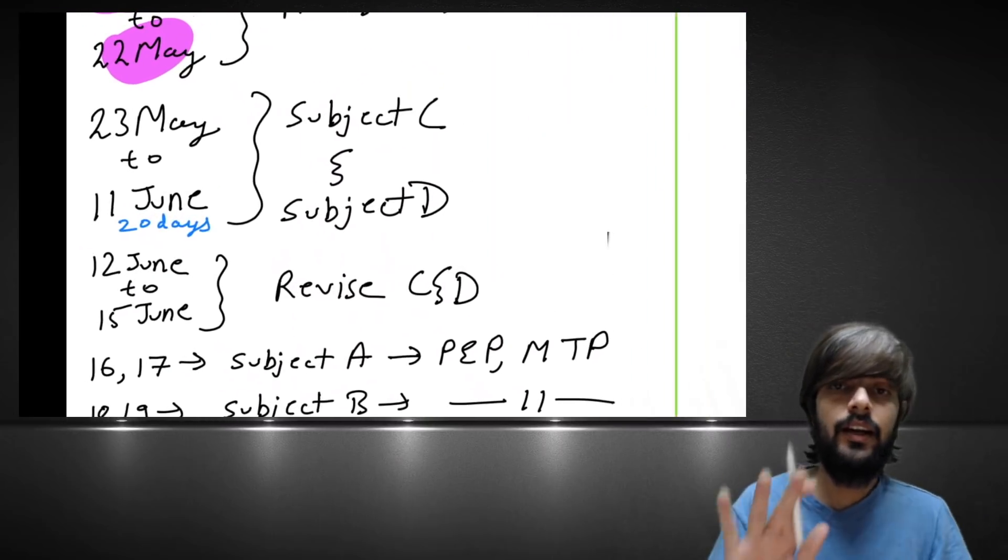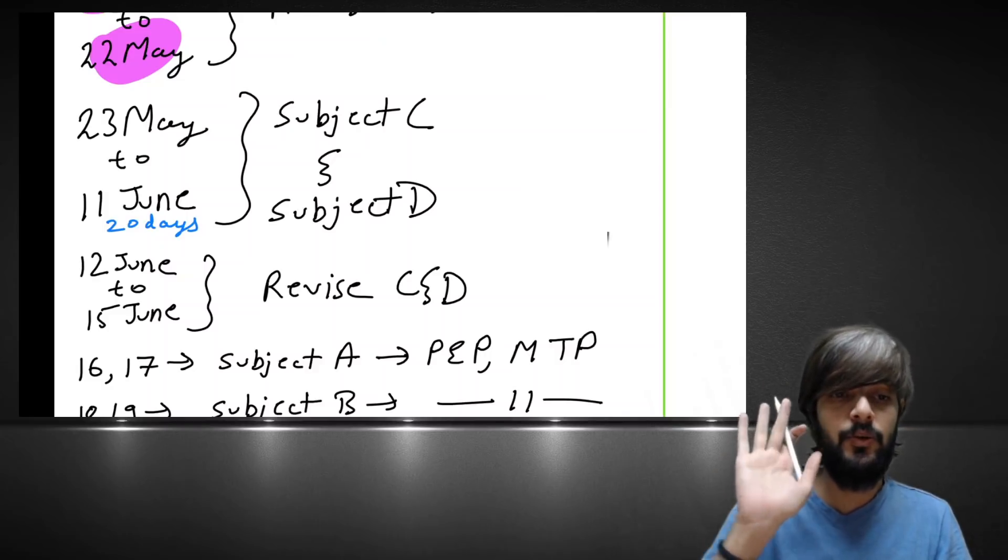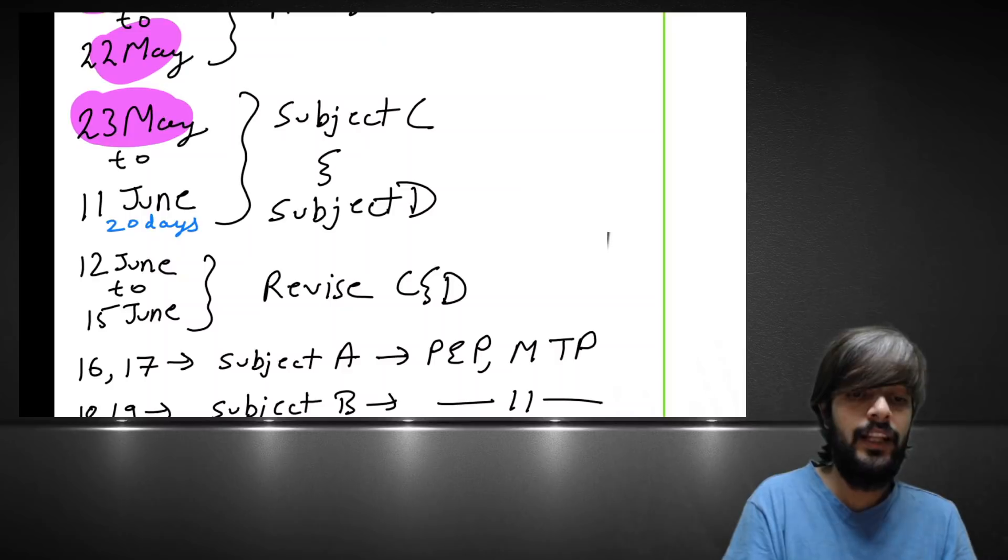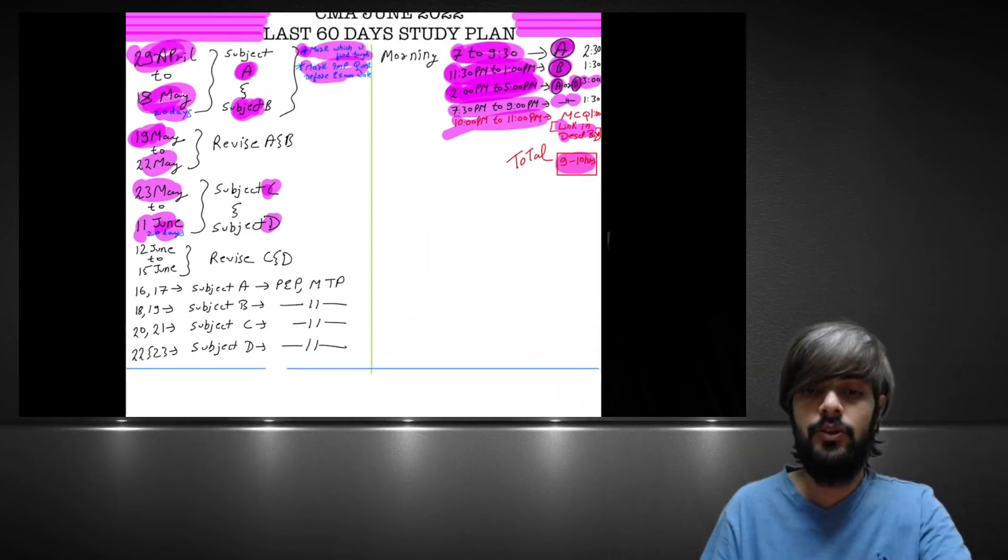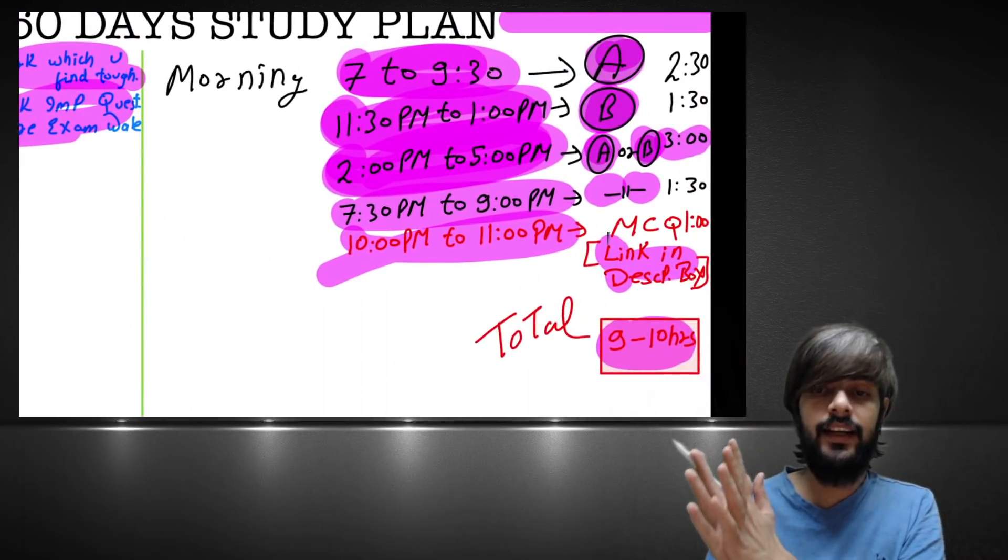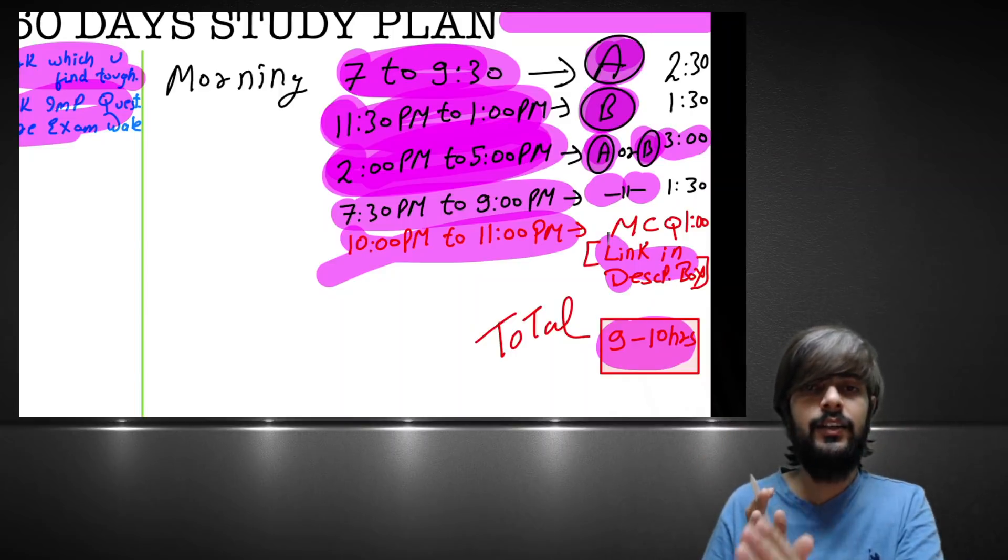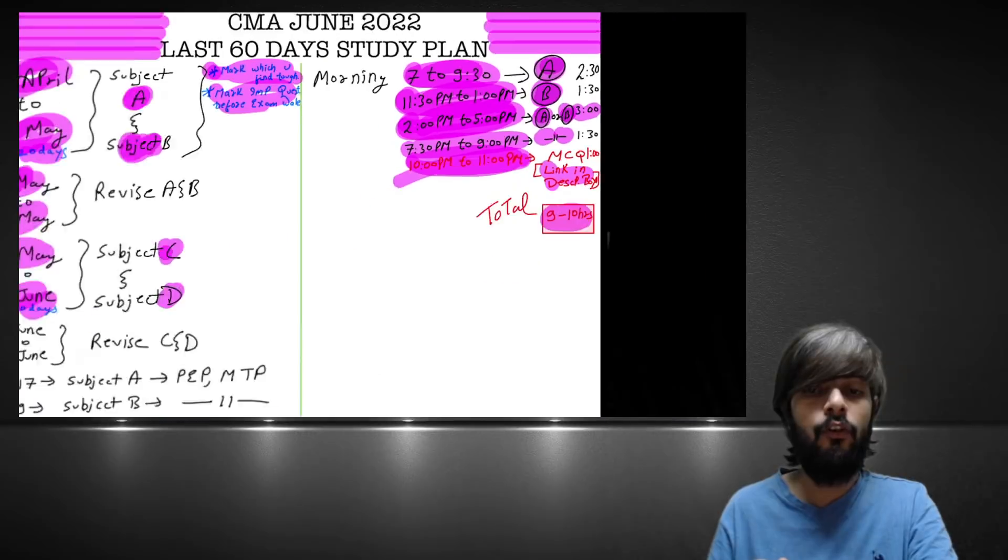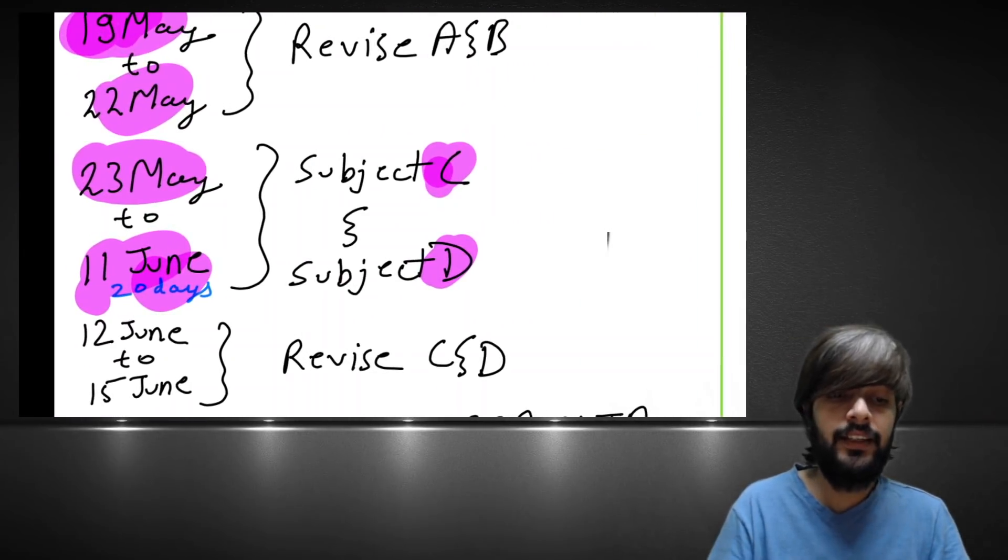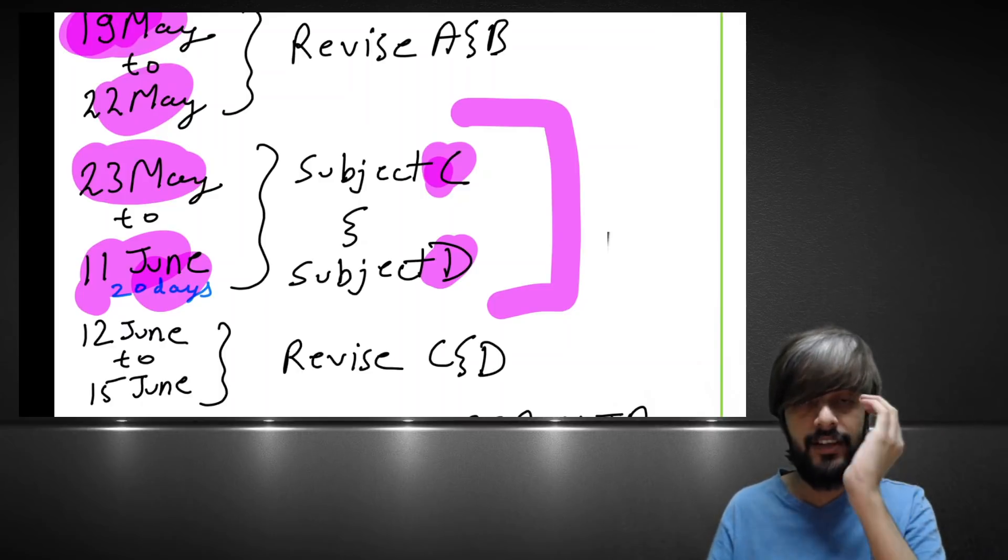Then from 23rd May to 11th June, again those 20 days, you target subject C and subject D, whichever is left. Same schedule you apply, 7 to 9:30, take theory subject. Then 11:30 to 1, you take numerical subject. Then 2 to 5, numerical or theory as the case may be. 7:30 to 9 also, numerical or theory as the case may be. And 10:00 PM to 11:00 PM, you practice MCQs. So you follow this same schedule for 23rd May to 11th June. So till 11th June, your subject C and subject D, whichever is there, will also be completed.